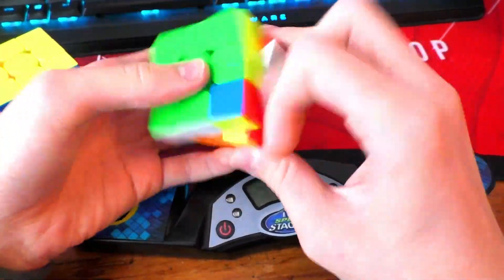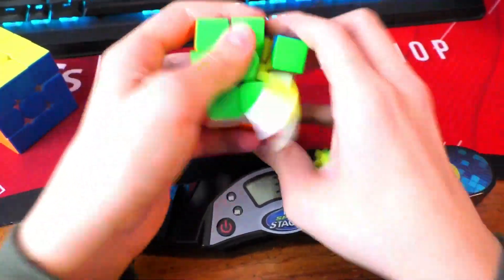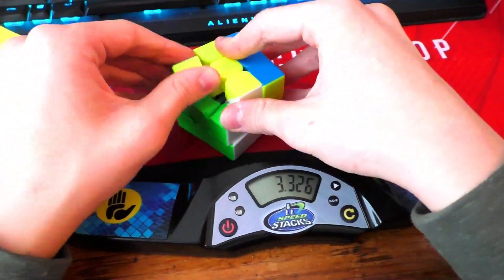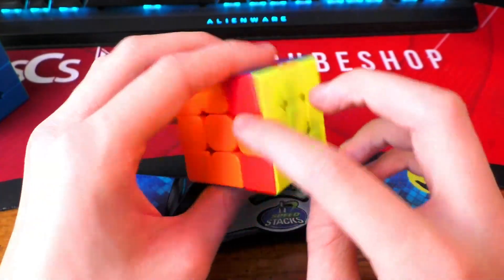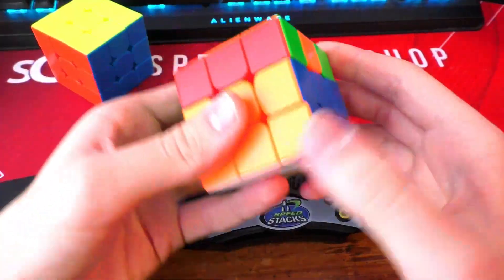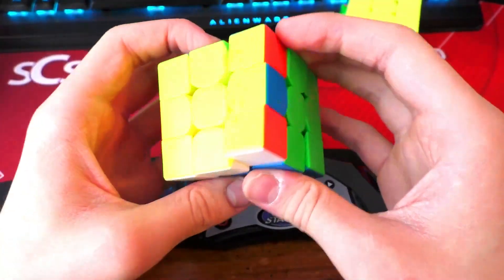That was amazing. For the last algorithm I'm going to be trying out on the cubes, I'm going to be doing the UA perm from the back. Let's try it out on the Yushin now.